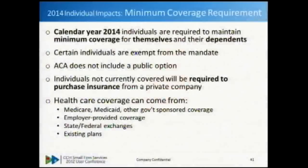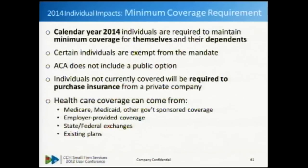2014 - the heart and soul of ACA: the minimum coverage requirement kicks in January 1, 2014. Individuals are required to maintain minimum coverage for themselves and their dependents. Exempt individuals include those already covered by a government-sponsored plan, incarcerated individuals, and those with religious objections - there's a whole laundry list. But the exemption must be granted by the state exchange; someone doesn't get to simply say they fall under one of these exemptions - they have to go to the state exchange and be granted an exemption.